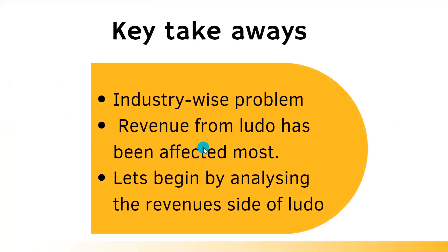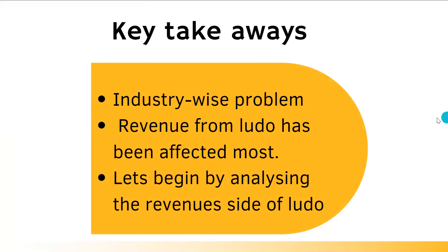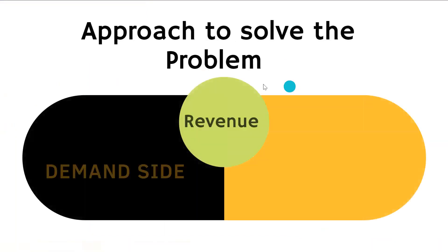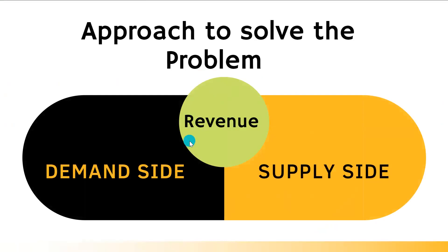Let's begin analyzing the revenue side of Ludo. We know that revenue may be affected by the demand side or the supply side — either there is a change in demand leading to decreasing revenue, or there might be an issue on the supply side as well. Let's analyze these one by one.